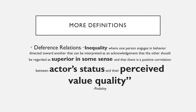This invisible hierarchy ultimately leads to deference relations, characterized by inequality where one person engages in behavior directed towards another that can be interpreted as an acknowledgment that the other should be regarded as superior in some sense, thus creating a hierarchy. There is also a positive correlation between actor status and their perceived value and quality.